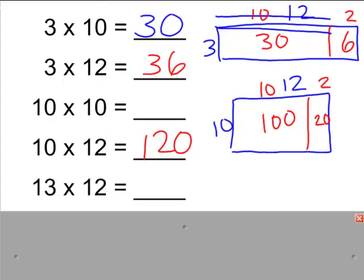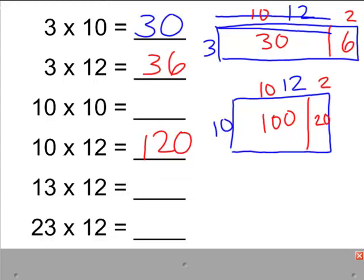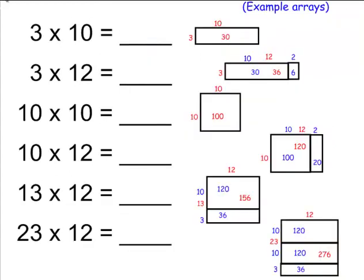Then we have 13 times 12 and finally 23 times 12. So you can see again how those are increasing in complexity and ending up with a problem that I think is really going to push my strongest kids. Remember, modeling with the open arrays is probably a new idea for you and your students, so you might want to practice modeling a string before you actually do it with your kids.